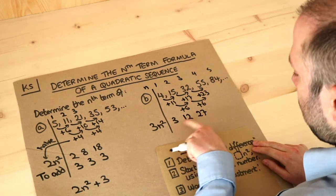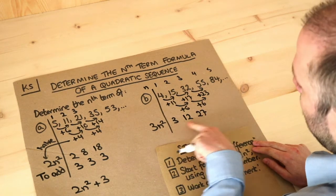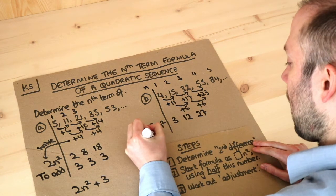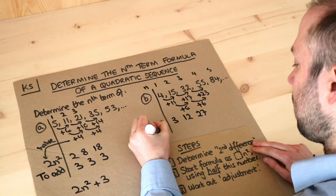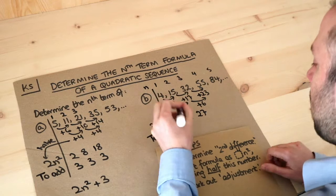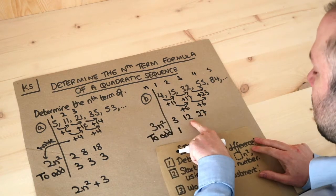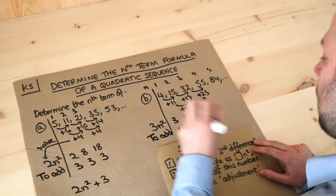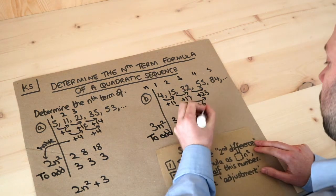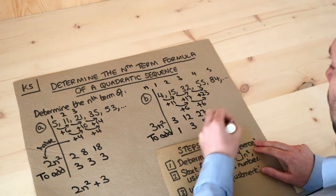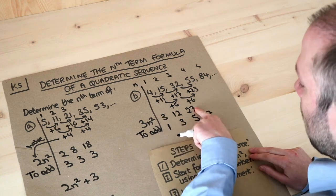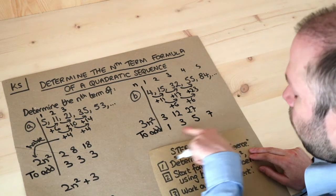The sequence 3, 12, 27 doesn't give us the correct terms 4, 15, 32. Working out the adjustment row: to get from 3 to 4 we add 1, from 12 to 15 we add 3, from 27 to 32 we add 5, and continuing it would be 7 next. So the adjustment sequence is 1, 3, 5, 7...